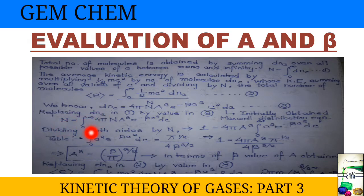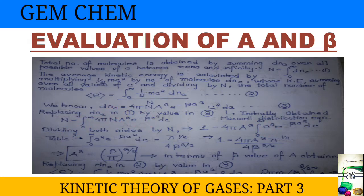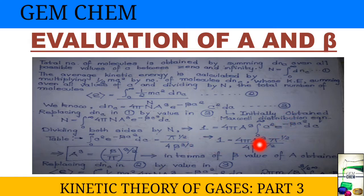Dividing both sides by N, we get 1 equals the integration. From tables, the constant value of the integral ∫c² e^(−βc²) dC equals (π^(1/2)) / (4β^(3/2)). Substituting this value, we obtain the expression for a³: a³ = (β/π)^(3/2). Thus we obtain the value of a in terms of beta.